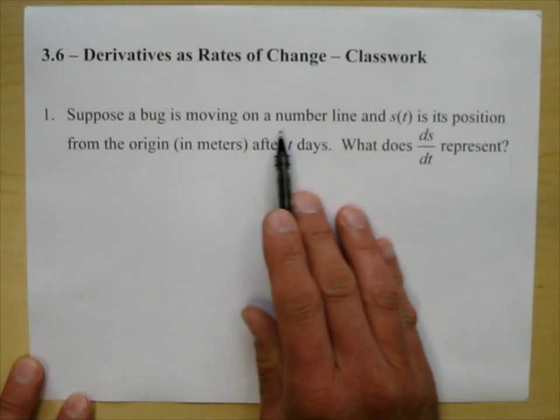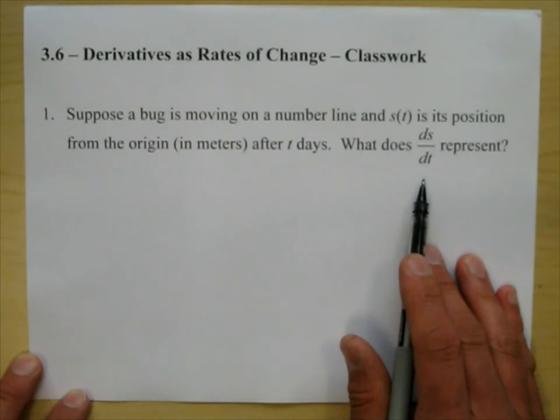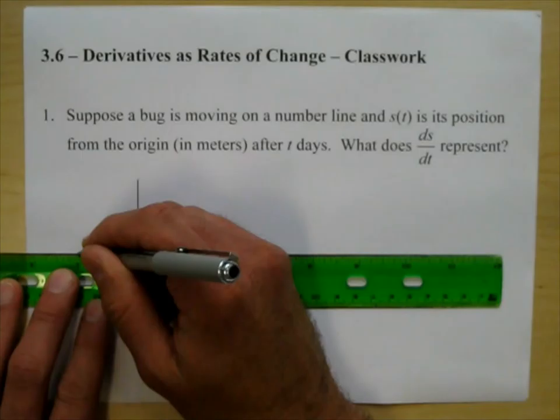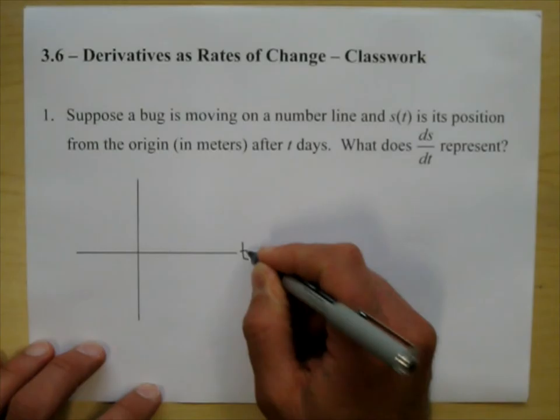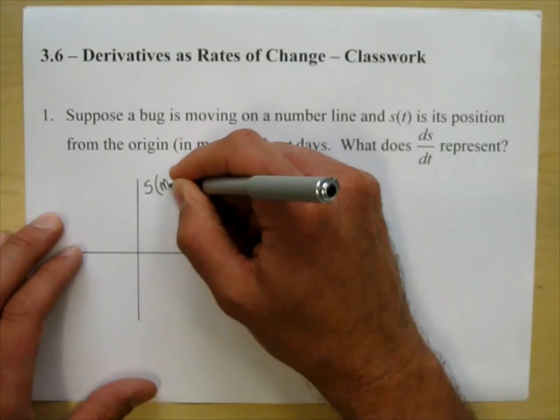Problem one: suppose a bug is moving on a number line and s of t is its position from the origin in meters after t days. What does ds/dt represent? I'm going to go ahead and draw this. We have time measured in days on the horizontal axis, and position measured in meters on the vertical axis.